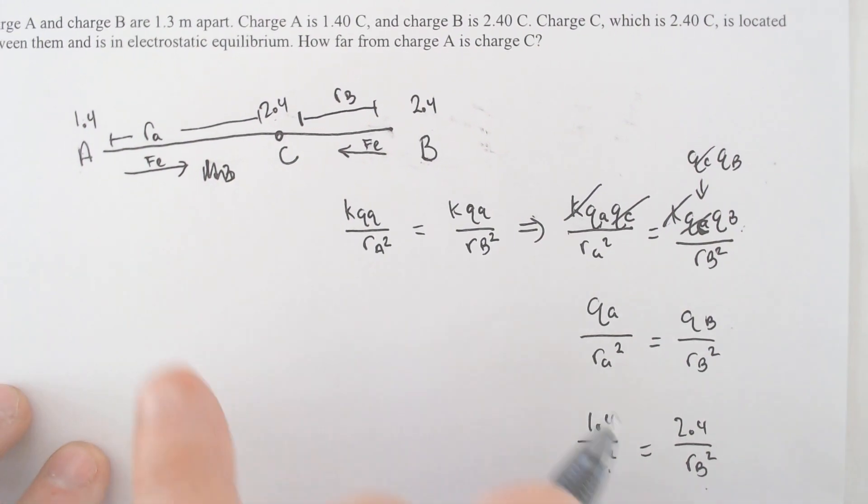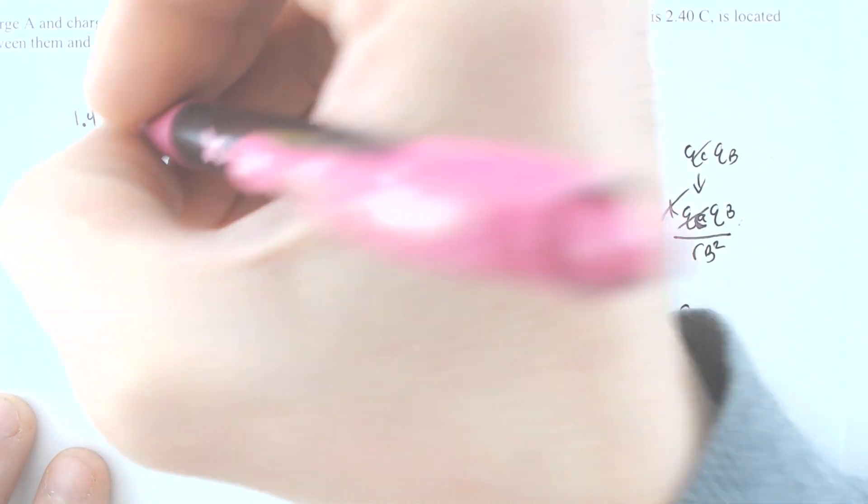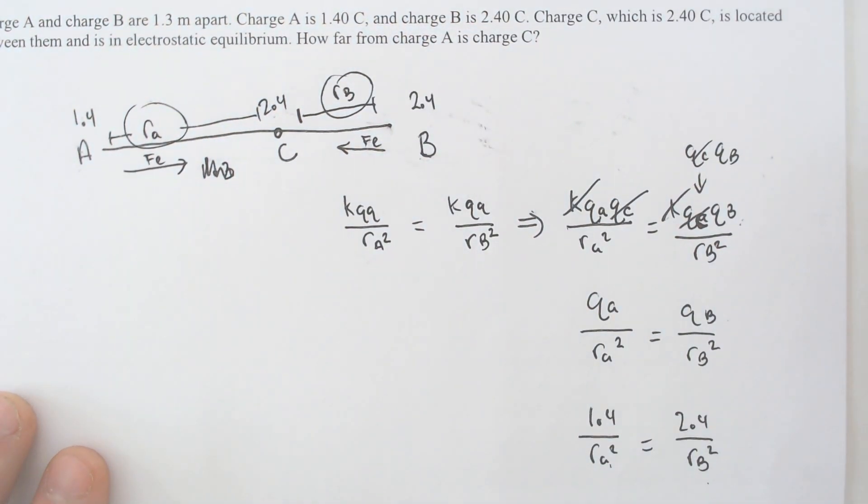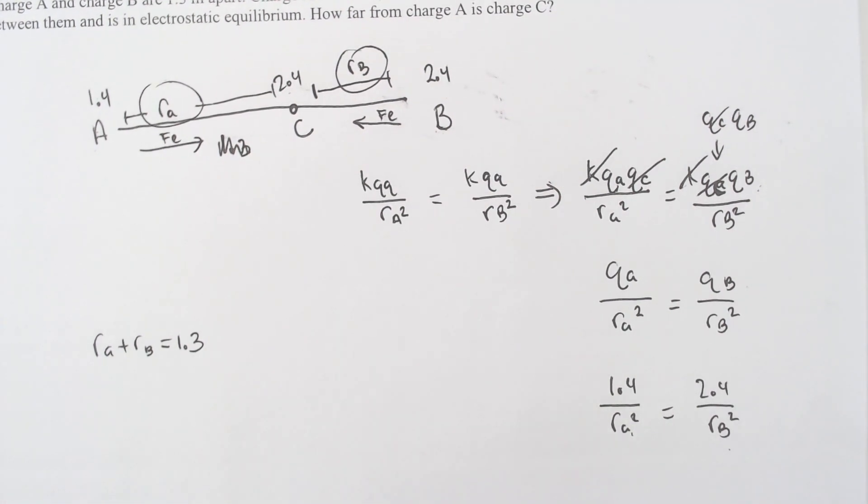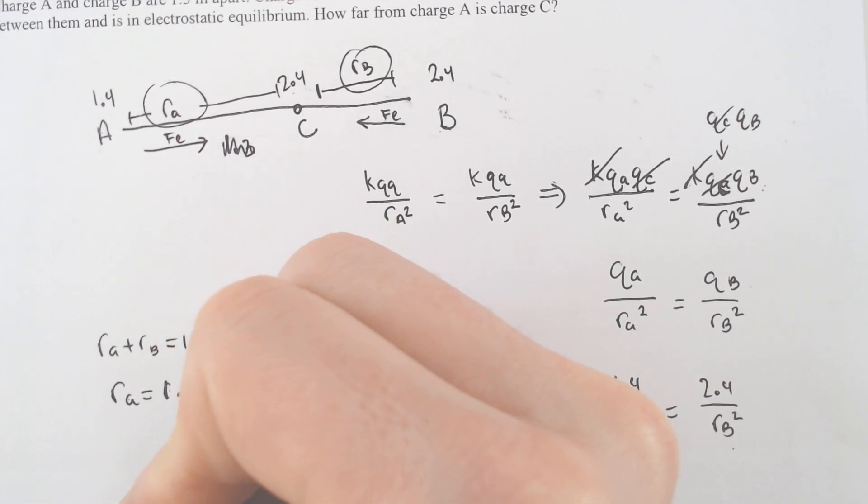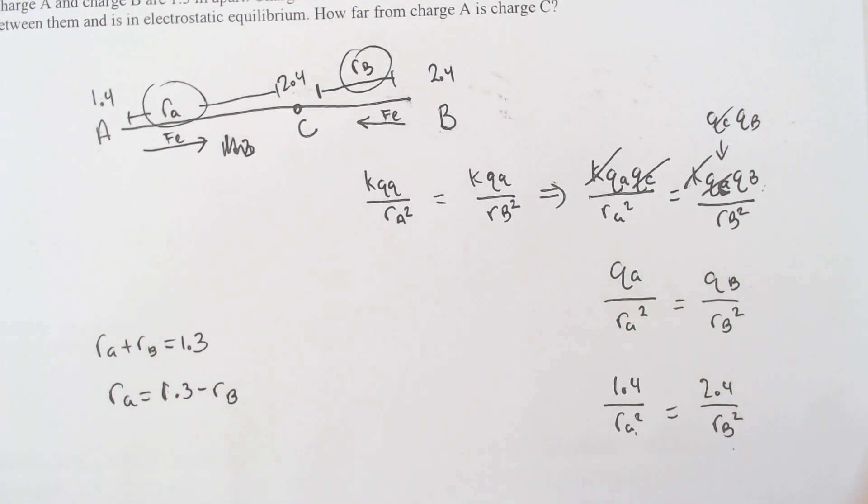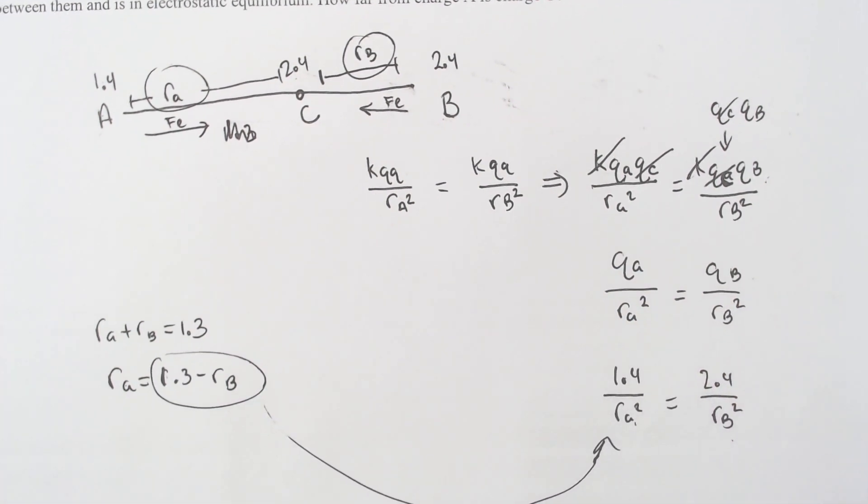So then we have to think a little bit about this whole thing is 1.3. So that means that R A and R B combined would equal 1.3. And if you manipulate that slightly, you get radius of A would equal 1.3 minus the radius of B. So I just move the radius of B over. And then you can plug that in for radius of A squared right there.